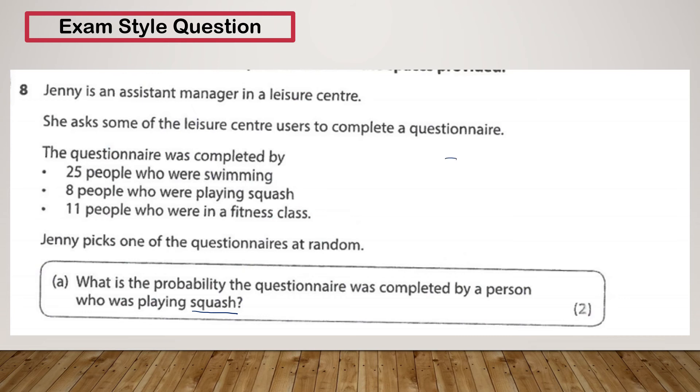Now there's 8 people playing squash, so these are the people that we're looking at. Now we need to work out the total amount of people. So 25 plus 8 plus 11 gives us 44. So there's an 8 out of 44 chance that it's completed by someone playing squash.